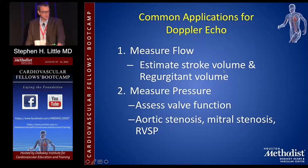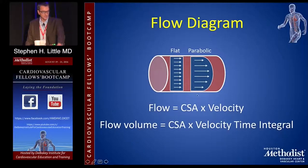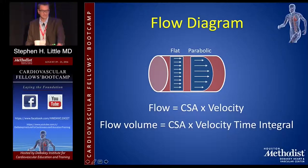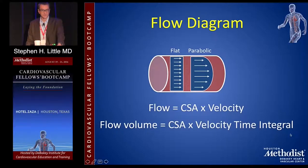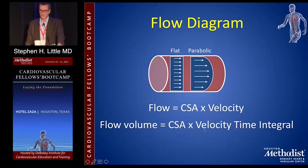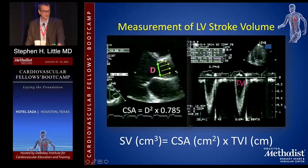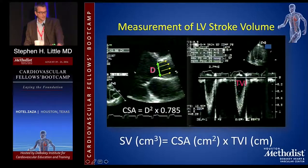To calculate things with Doppler — stroke volume, regurgitant volume, and pressures — the basic principle is: flow volume equals cross-sectional area times the velocity time integral (VTI, also called TVI). The VTI is the integration of all peak velocities within the ejection period and represents a unit of distance. Area (cm²) times distance equals volume. In practice: measure the LVOT diameter, assume it's a circle, so D² times a constant gives area, times the VTI-derived distance equals stroke volume.